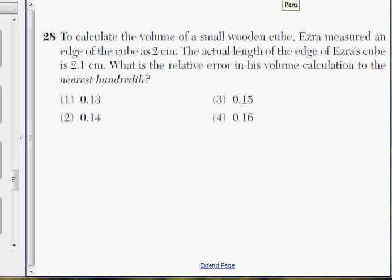Key word here is volume, calculation to the nearest hundredth. What we do is actually find the volume of this cube. Ezra measured it to be 2 cm for each edge. This is my best drawing of a cube. Each side is 2.